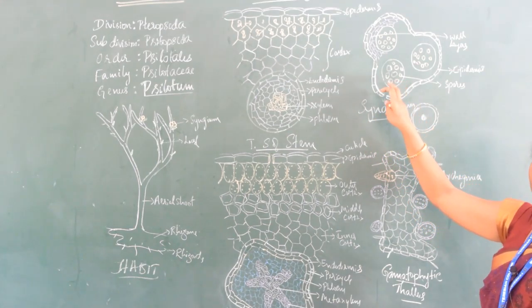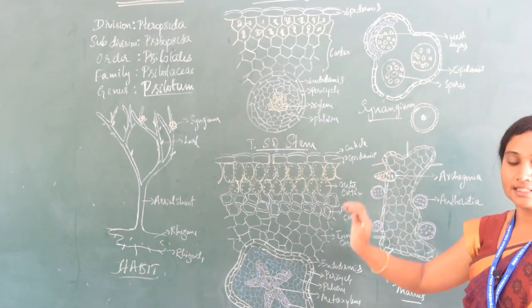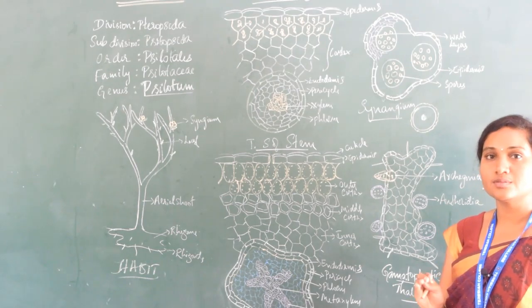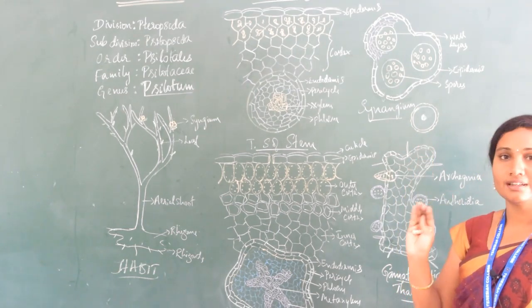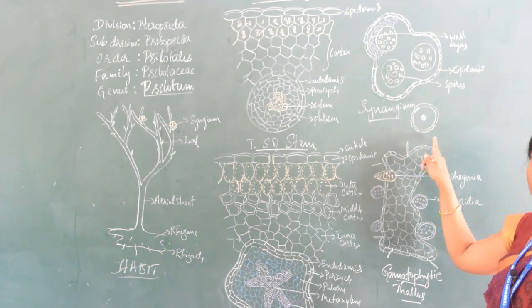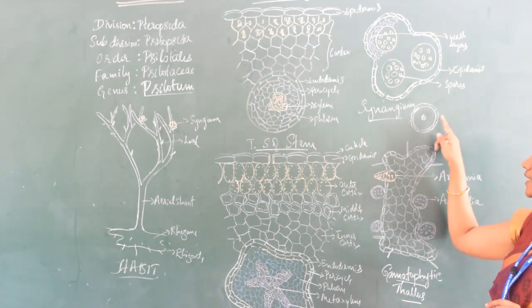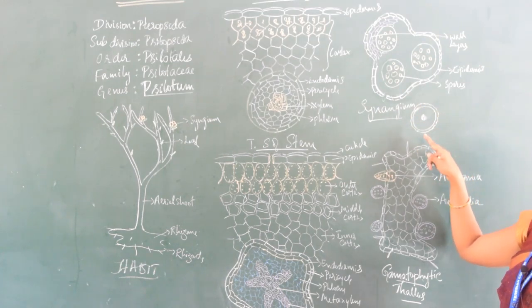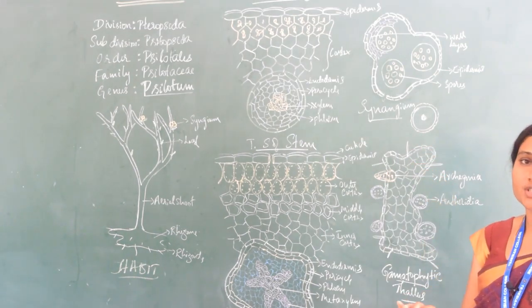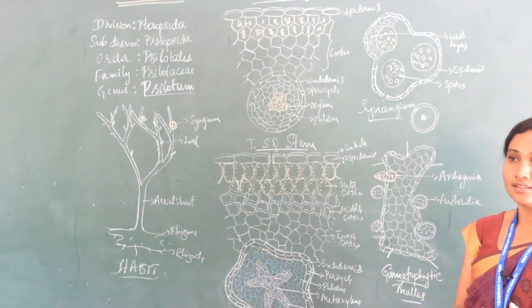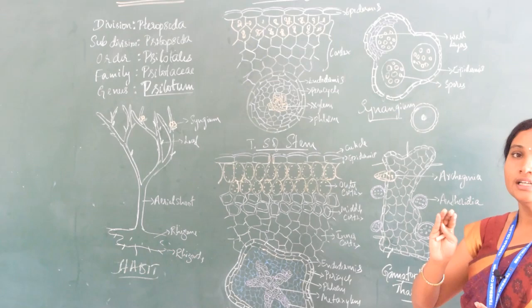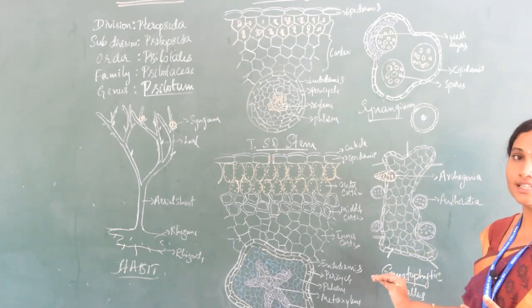Inside the cavity, spore mother cells are present at the mature stage. After maturity, the spore mother cells undergo reductional division — meiotic division — forming spore tetrads. Each spore tetrad is released at the time of dehiscence. After dehiscence, each single spore has an inner intine wall and an outer exine wall. The outer exine wall is reticulate in nature. These spores remain in the atmosphere for four weeks.